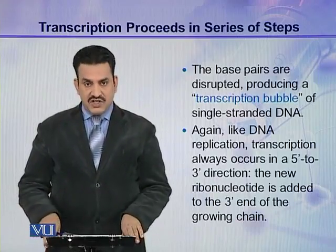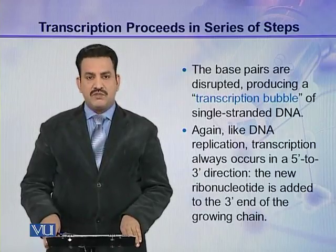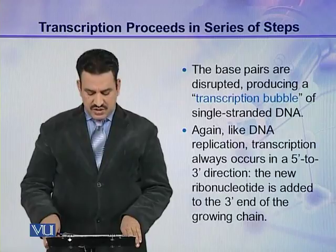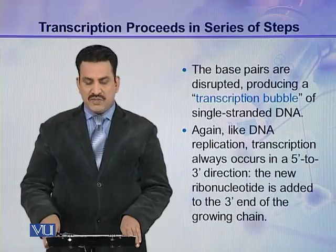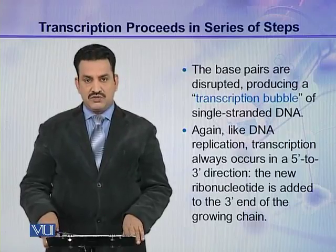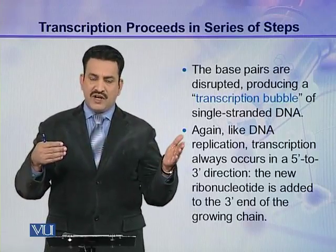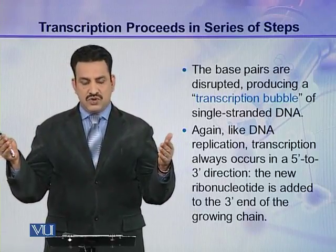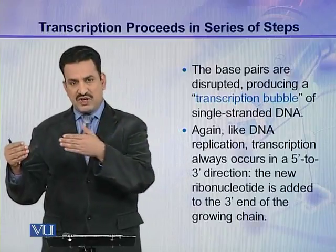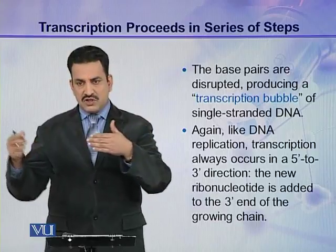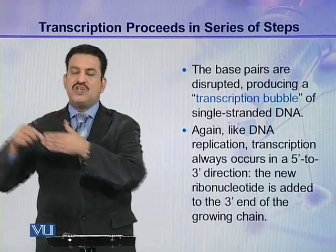Like DNA replication, transcription always occurs in a 5' to 3' direction. That is, the new ribonucleotide is added to the 3' end of the growing chain. DNA has polarity with a 5' end and a 3' end, so transcription proceeds from 5' to 3', meaning new nucleotides are added at the 3' end.